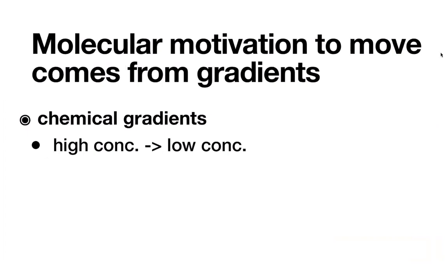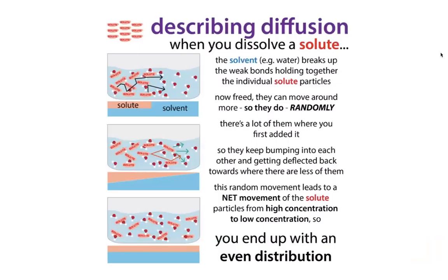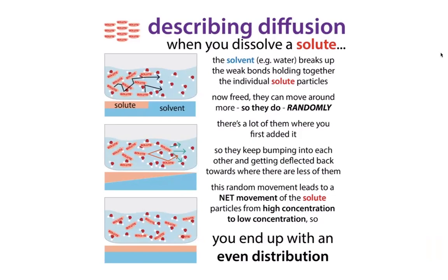First, let's think about what makes it favorable or unfavorable for something to move through a membrane. The molecular motivation to move comes from gradients. We can refer to chemical gradients, where things move from high concentration to low concentration — basically via diffusion. When you dissolve a solute, you start with a high concentration where it dissolved, those molecules move around randomly, and based on their random movements they disperse, resulting in net movement from high to low concentration until you reach an even distribution.